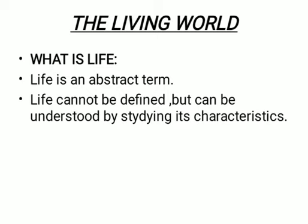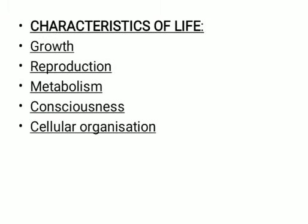Life cannot be given a simple definition because it is an abstract term. By abstract, I mean a term which cannot be directly defined — it can only be known by the characteristics it holds. For example, the word 'honesty' — you cannot touch it; honesty is defined by its characteristics. Similarly, life is an abstract term. The characteristics of living beings include growth, reproduction, metabolism, consciousness, and cellular organization. Understanding these characteristics helps us define what life is.